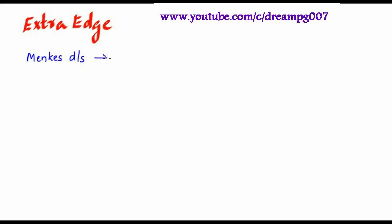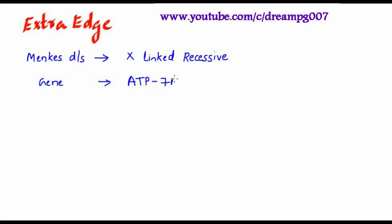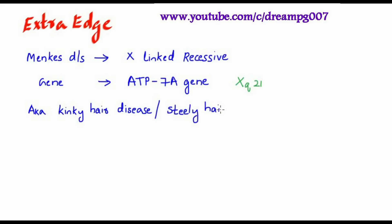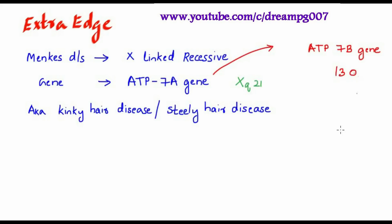The type of inheritance in Menkes disease is X-linked recessive. The gene mutated is the ATP7A gene, also known as MNK gene, located on the X chromosome at Xq21. Other names for this disease are Kinky hair disease or Steely hair disease. There is another gene called ATP7B, located on chromosome 13, whose mutation leads to Wilson's disease.